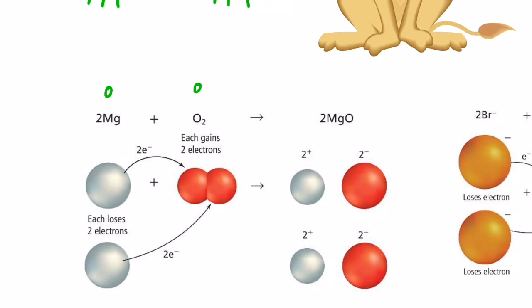But if you look on the other side of the equation, we form the chemical compound magnesium oxide. In order to do that, magnesium lost two electrons. It now has an oxidation number of positive two. And oxygen gained two electrons, didn't it? To become negative two.